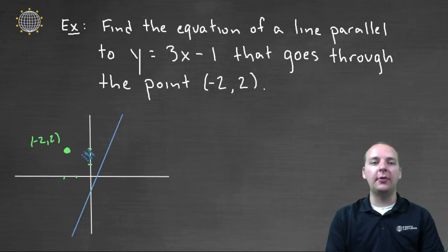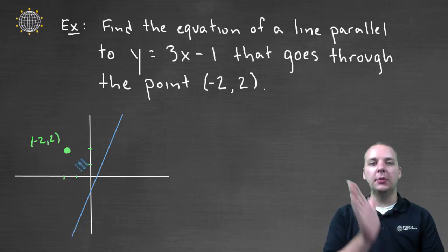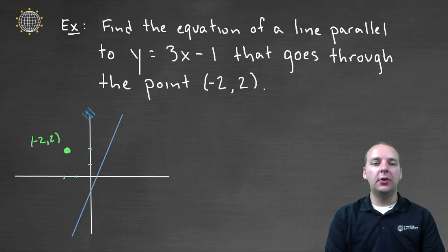Can you picture the line that they're after? What we want is a line that runs in the same direction as the blue line, that has the same slope as the blue line, that actually goes through the green dot. So hopefully you're thinking something along these lines, maybe something that looks kind of like this.